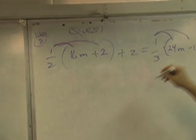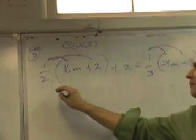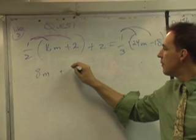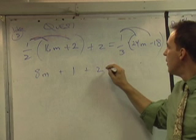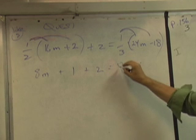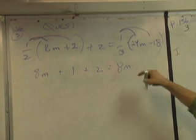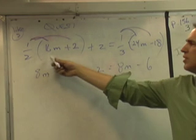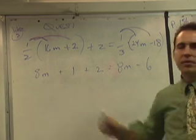Distribute the one-half into the 16m, so it's going to be 8m plus 1 plus 2, and then you're going to distribute the one-third into the 24m and the 18, so it's going to be 8m minus 6. Does everybody understand that? Make sure they do. Does they see why that comes out?